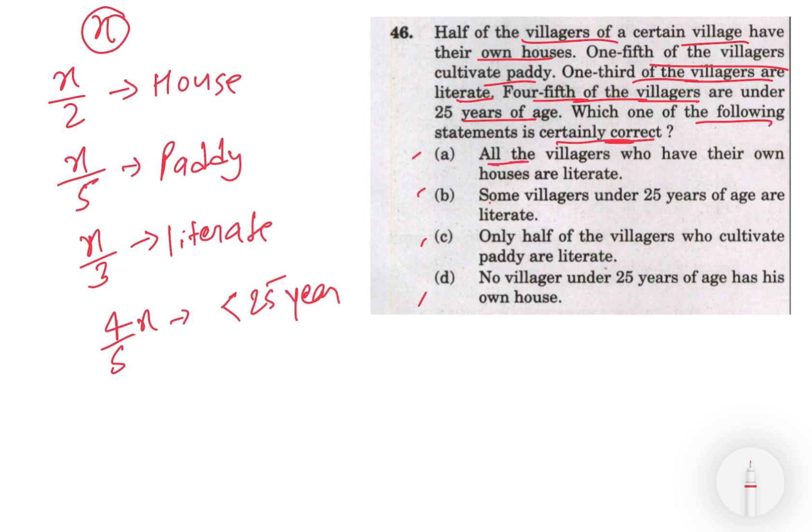So is mein aap kya dekhiye - yahaan dekhiye question me all diya hai, pehla me all diya hai, dusra me some dekhiye. All matlab lag-bhag sab ko include karna hai, dusra some hai matlab kuch ko include karenge, tisra only half ismeh bhi exact diya hua hai, chotha no villagers ismeh bhi exact hai. Toh agar aapke paas some hai, option maar na hai toh directly aap B ko option maar sakte ho.